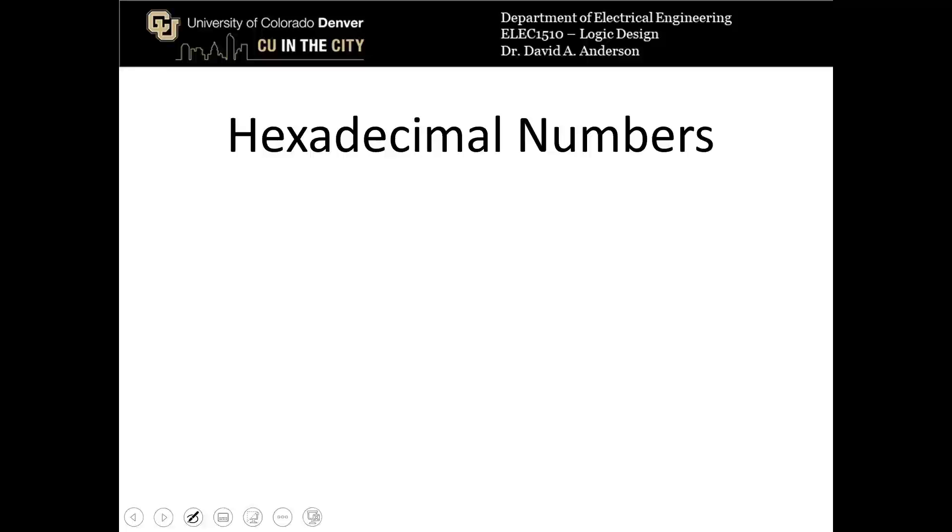Hexadecimal numbers are another number base that we use all the time. This is probably actually the most commonly used as you get deeper and deeper into computer design. Hexadecimal numbers are base 16 numbers, so each place is a power of 16. What's weird about this one is that we have to introduce some new characters, because in the traditional number system that we use we only have 0 through 9. So because we have to represent 16 different digits, for 10 through 15 we use A through F.